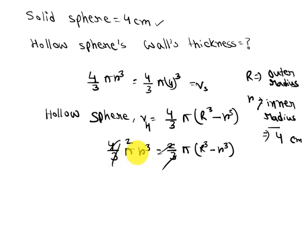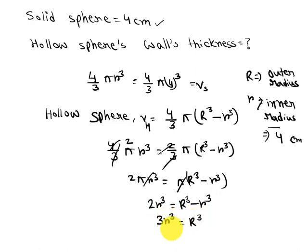2πr³ = π(R³ - r³). The π terms cancel out. We get 2r³ = R³ - r³, so 3r³ = R³.